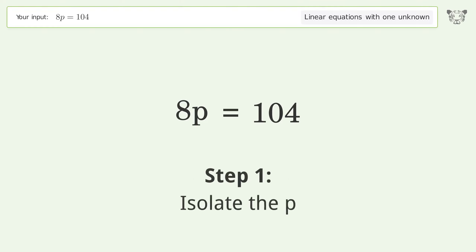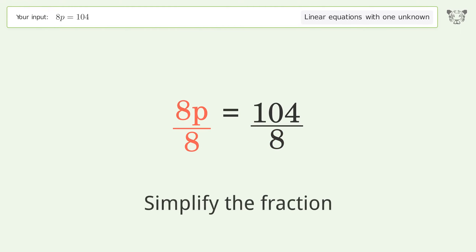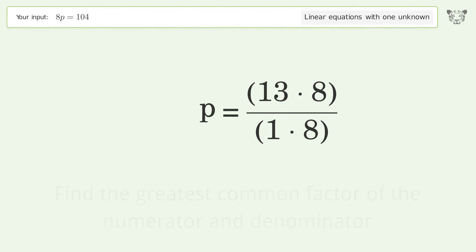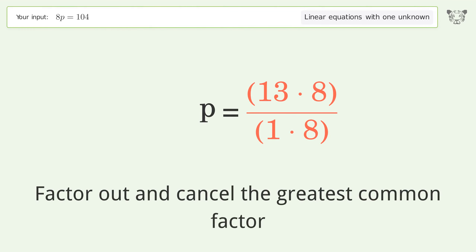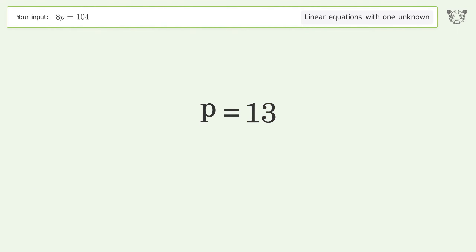To isolate p, divide both sides by 8. Simplify the fraction by finding the greatest common factor of the numerator and denominator. Factor out and cancel the greatest common factor. And so the final result is p equals 13.